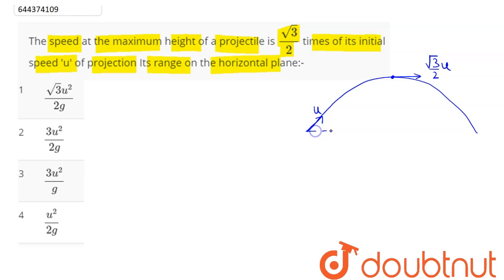We can say here if the angle of projection is θ, since acceleration along the x-axis is zero, the x-component of velocity remains the same throughout the motion, that is u cos θ. This remains as √3/2 times u, so cos θ equals √3/2.